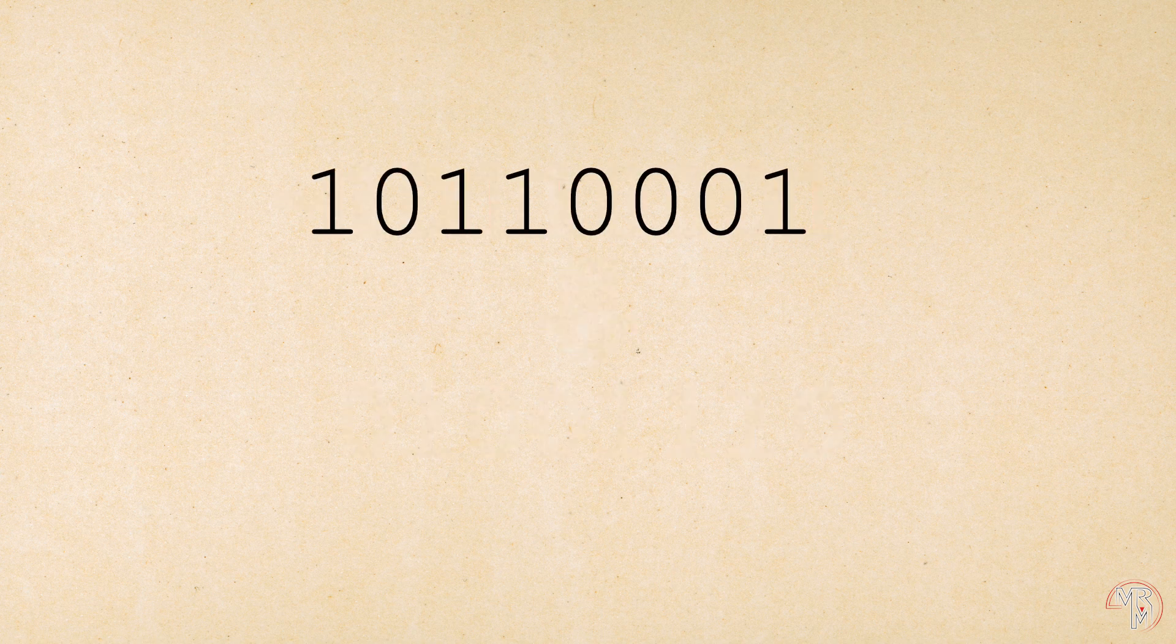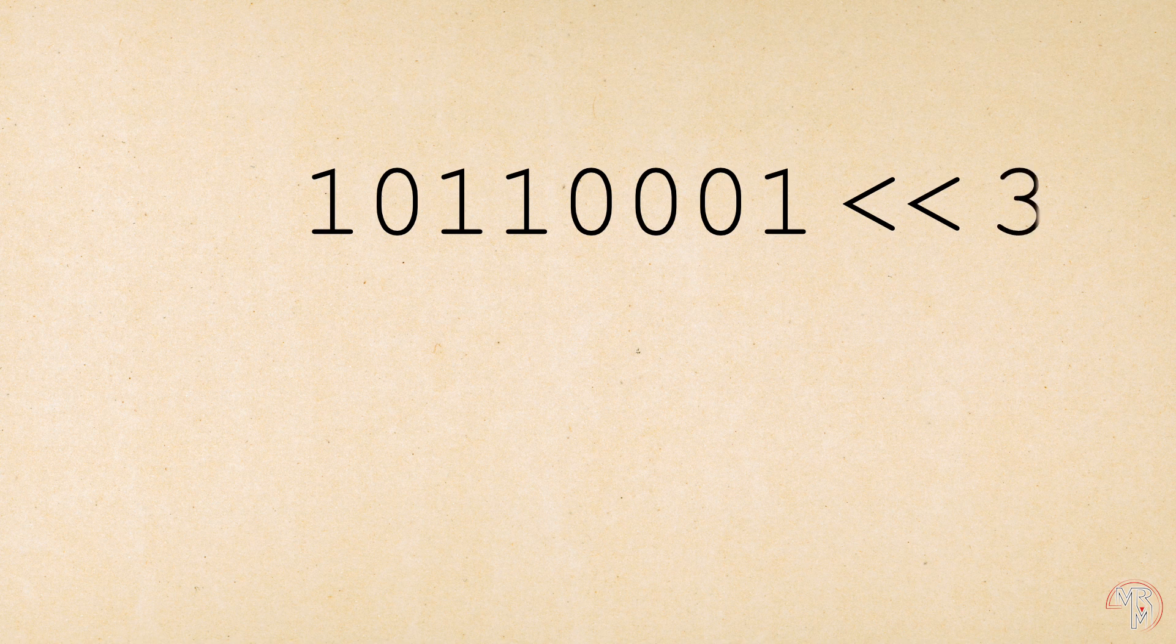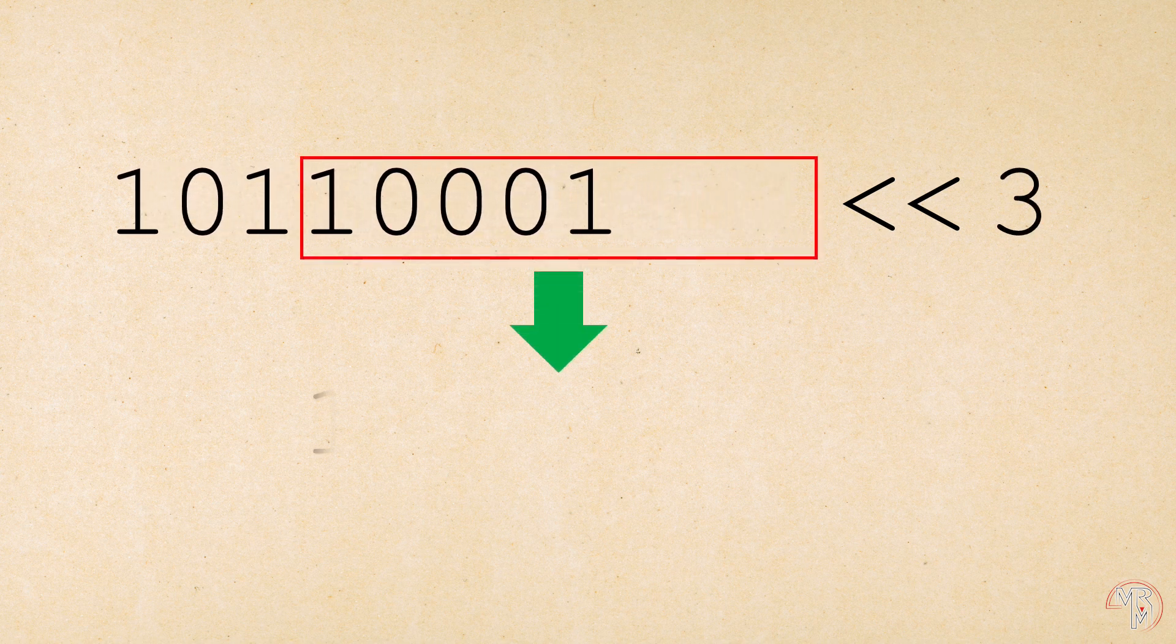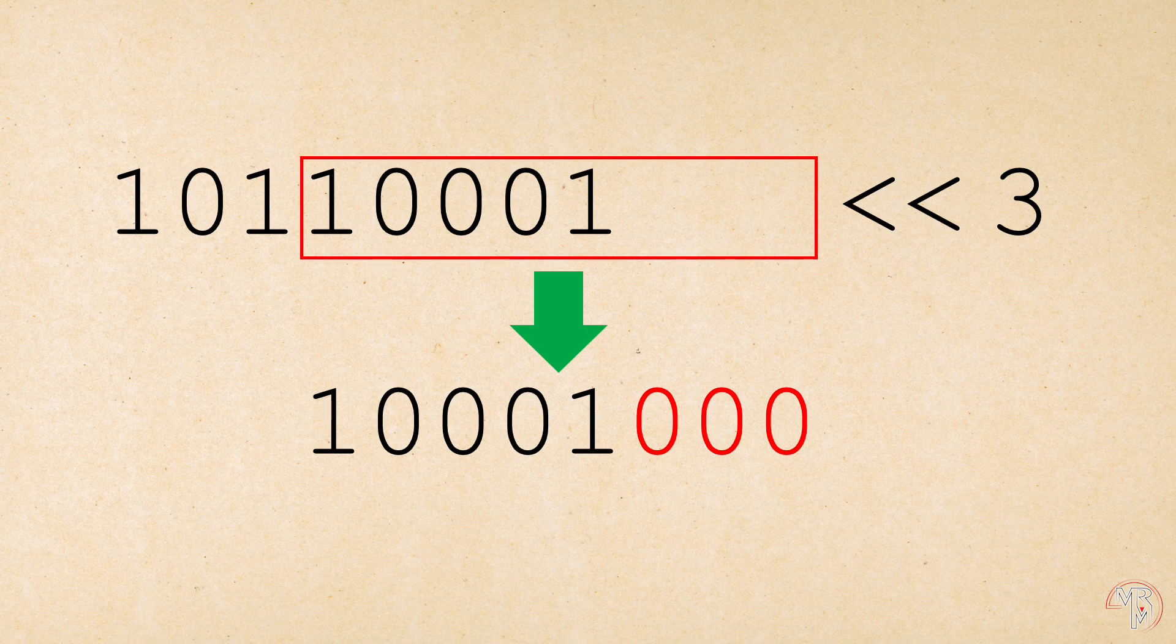And finally, the SHIFT operators. A binary sequence can be shifted left or right by a certain number of places. For example, shifting this binary sequence to the left by, say, three will result in the following sequence. Please note that when shifting left, the bits on the right are set to zero.